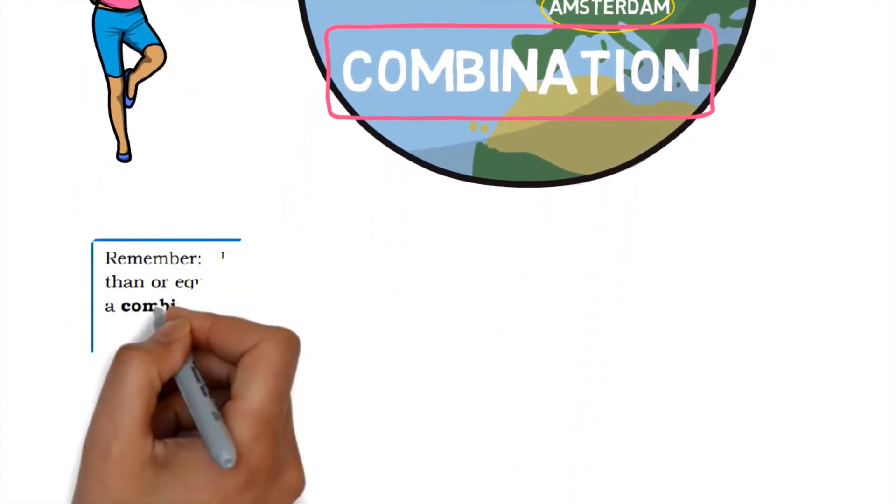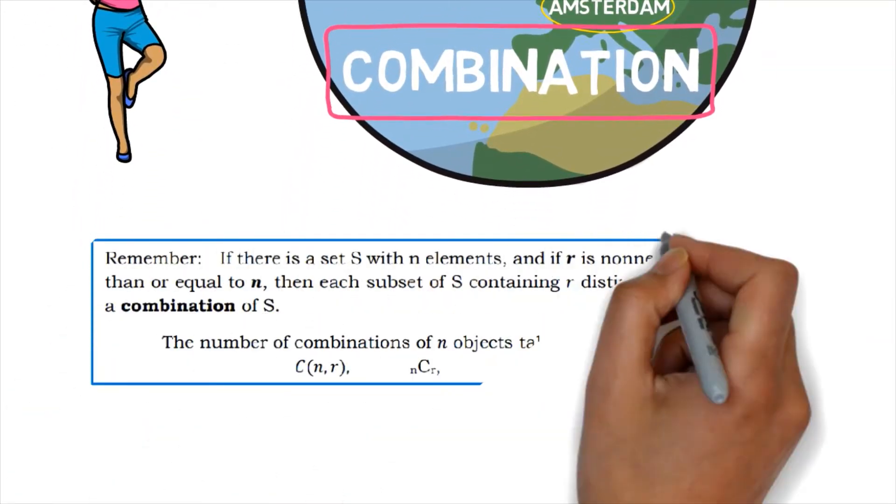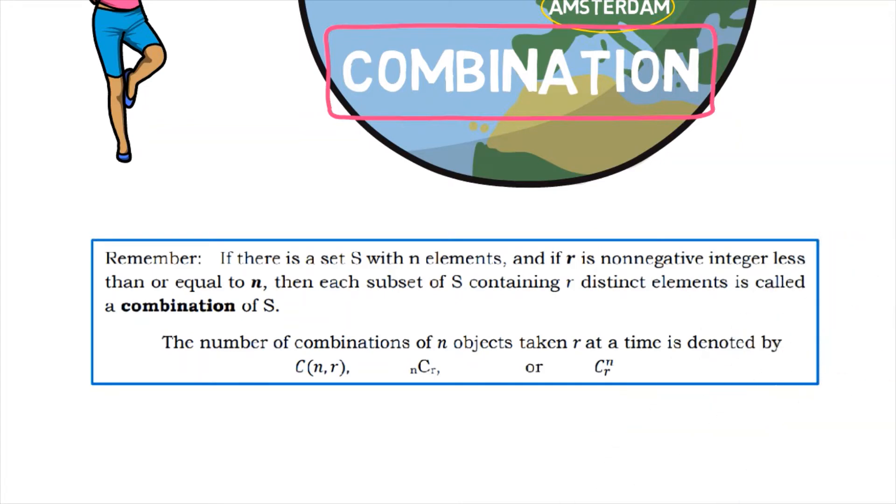Remember, if there is a set S with N elements, and if R is a non-negative integer less than or equal to N, then each subset of S containing R distinct elements is called a combination of S. The number of combinations of N objects taken R at a time is denoted by the following symbols that you might encounter when dealing with combinations.